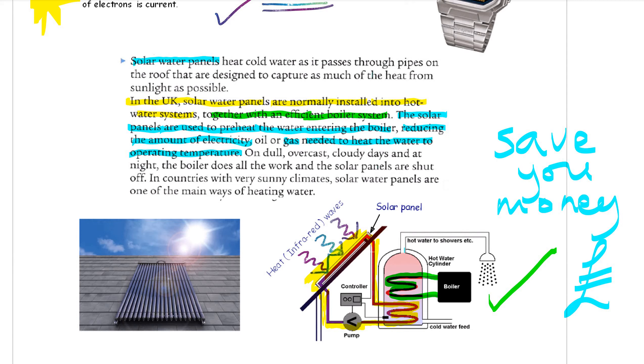In other countries, with very sunny climates, the water panels, that's the yellow system, can be the main ways of heating water. They might not have gas and electricity.